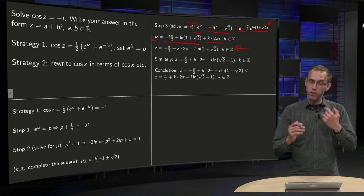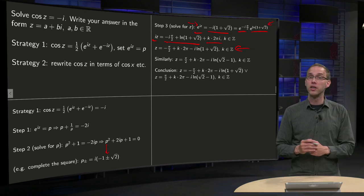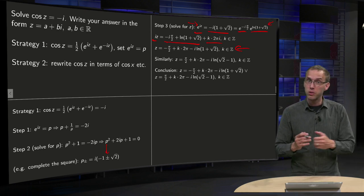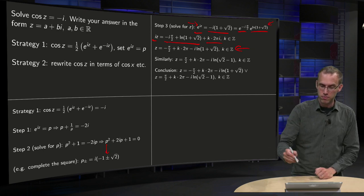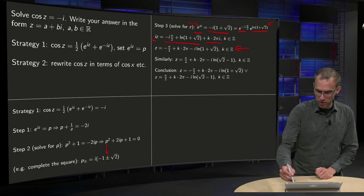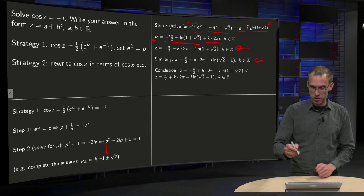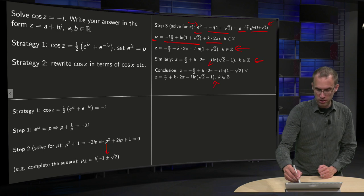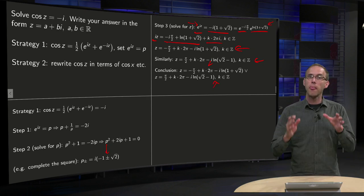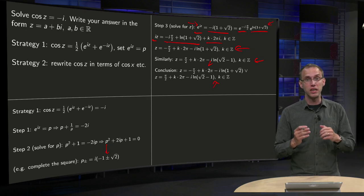We have only done the plus sign for p. We can also do the minus sign — it is exactly the same way — and you get those solutions. So you conclude z is either this one or that one, and then you have your complete solutions for z.